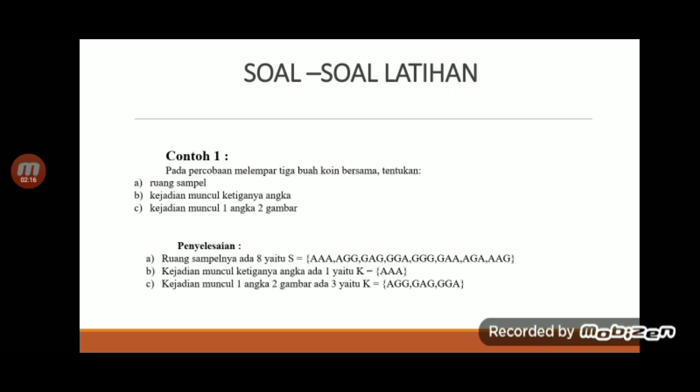Then B is the result of the third angle, which means A, A, A. Then C is the result of the result of the angle, which means A, G, G, G, A, G, and G, G, A. That means there are three. Let's continue with the number two.